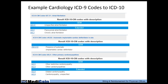For example: ICD-9 code 427.31 is atrial fibrillation. Through GEM mapping, that goes to I48.91, unspecified atrial fibrillation. However, if you can identify whether this is paroxysmal or chronic atrial fibrillation, choose one of those two codes rather than unspecified. For an automatic implantable cardiac defibrillator, there is a direct translation from ICD-9 to ICD-10 — the GEM gives you the exact code. For ICD-9 code 425.4, other primary cardiomyopathies, that translates to two possibilities: restrictive cardiomyopathy or, extended out, dilated cardiomyopathy or unspecified cardiomyopathy.